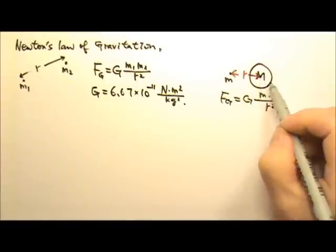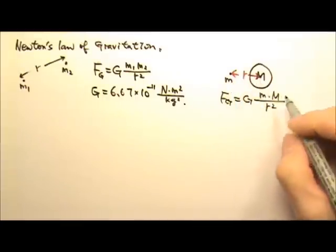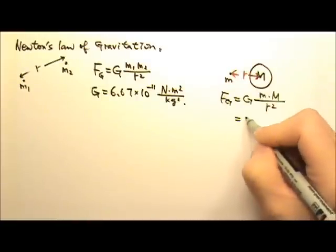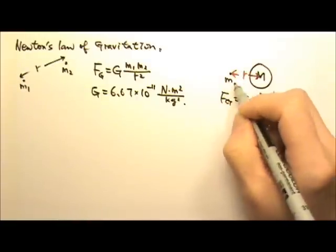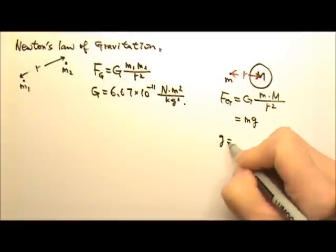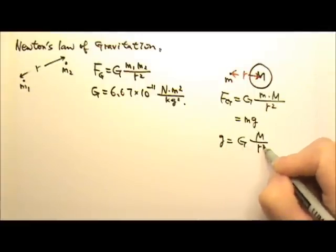Now if this is the planet and this is a small object mass M, that means this gravitational force is also the Mg, the weight of this object. So if I cancel the little M, I get that gravitational acceleration at a location equals to G M over r squared.